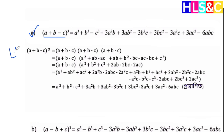On the left-hand side we have (a plus b minus c) whole cube. We can write it as (a plus b minus c)(a plus b minus c)(a plus b minus c). Here, because of the key, I'm going to expand this step by step.